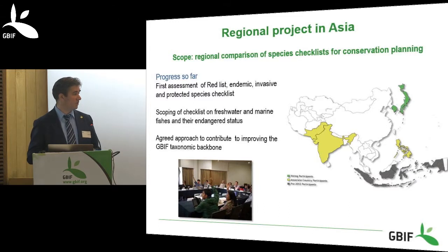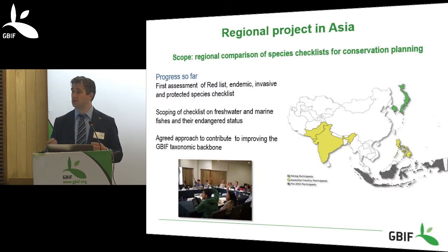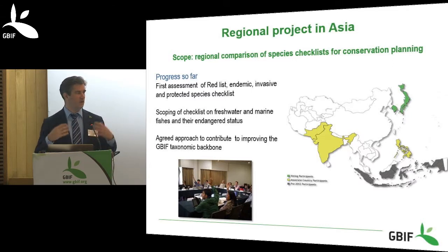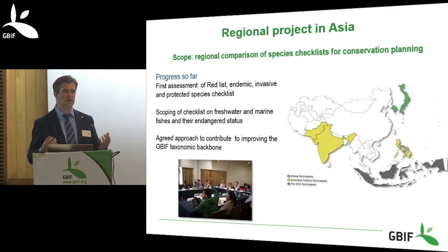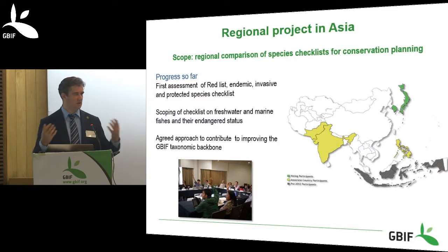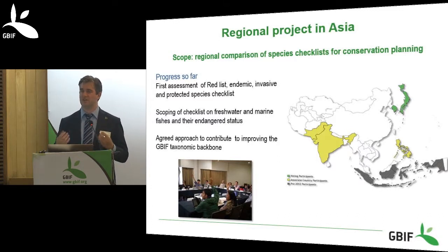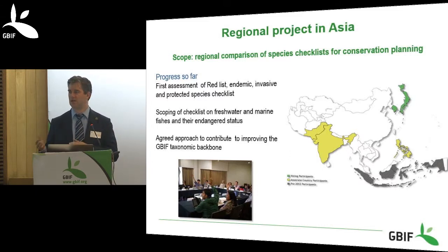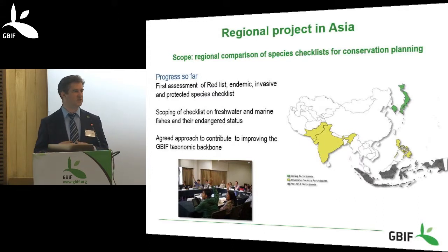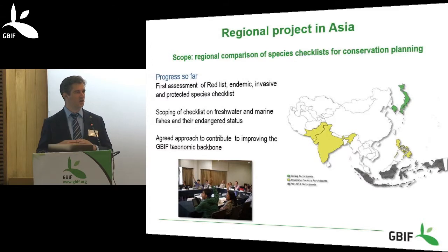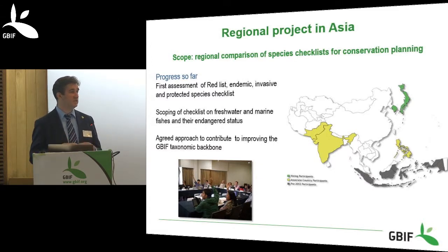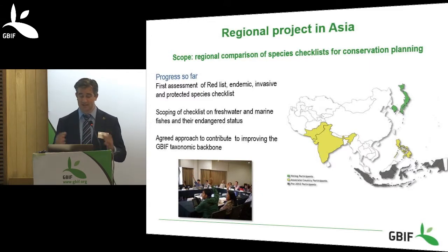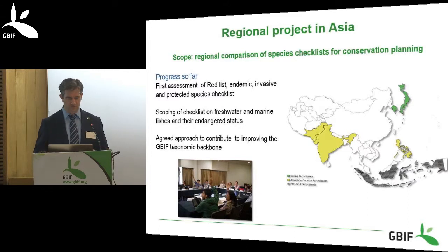One example is in the Asian region, where GBIF participant nodes have acknowledged a lack of available biodiversity information within the region. They are addressing this by mobilising more biodiversity data, and have especially identified the need to compare checklists on endemic and protected species between different countries. They have embarked on a project to determine whether countries are talking about the same species and whether those species have similar protection status — a very important project, particularly in terms of global change.